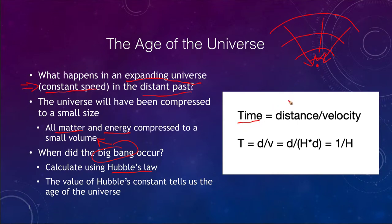We know that if we're trying to figure out how long something took, we take the distance that we traveled divided by our velocity. For example, if we traveled 500 miles at 50 miles an hour, we could take 500 divided by 50 and find out that it took us 10 hours.